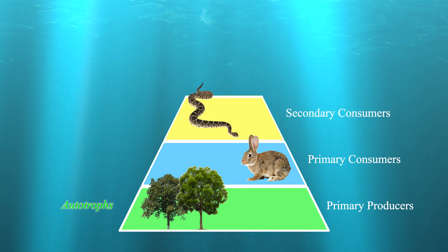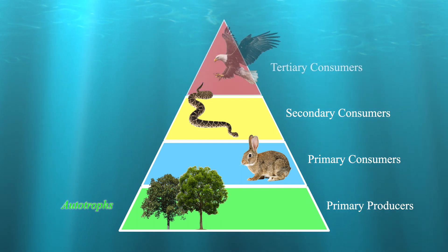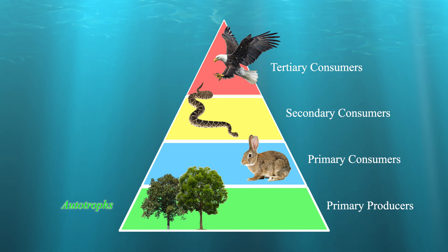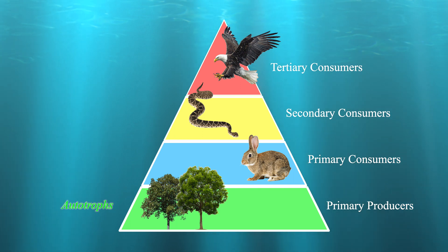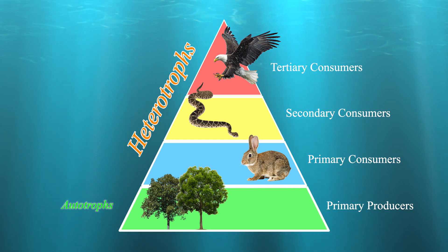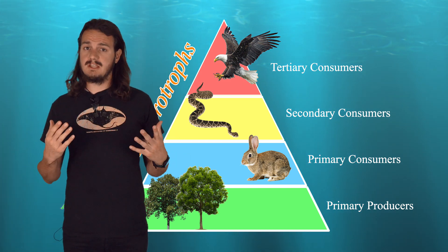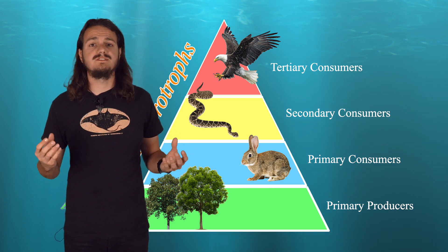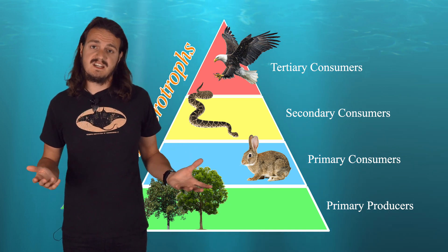Further up there are secondary consumers, predators that will feed on primary consumers. And then at the top you will find tertiary or quaternary consumers, large predators that can feed on everything underneath them. Most consumers are not capable of acquiring energy without consuming organic matter, making them heterotrophs. As energy flows through the food web, it gets turned into biomass, the quantity or weight of organisms in a given environment. The pyramid is the shape used to summarize the abundance of biomass, usually with size or trophic level.